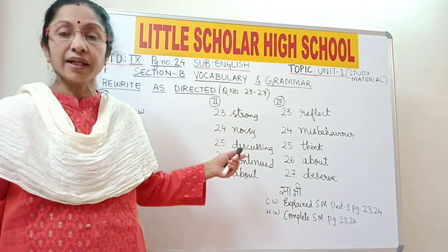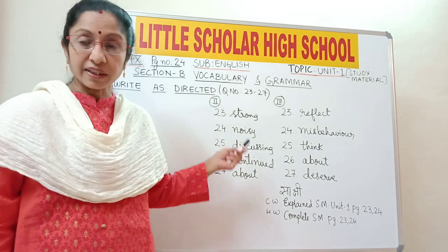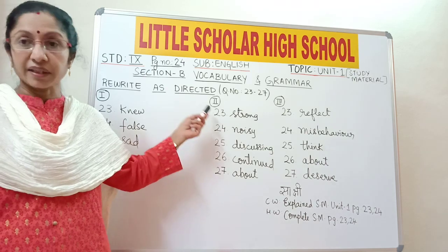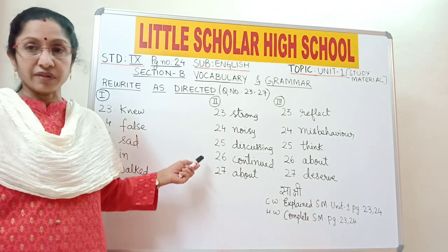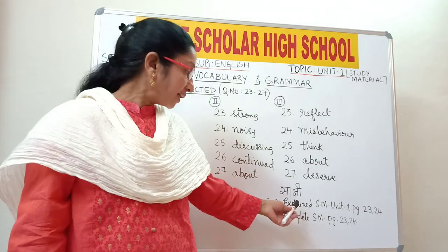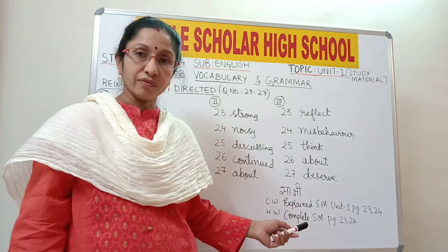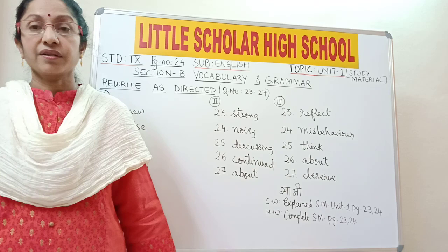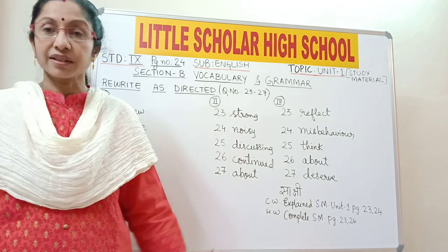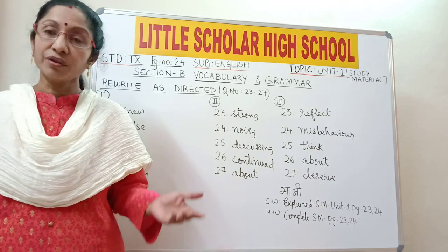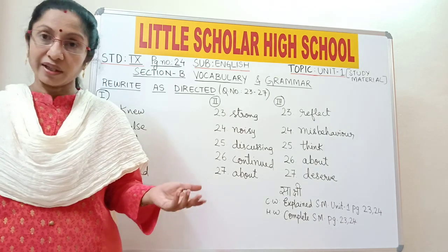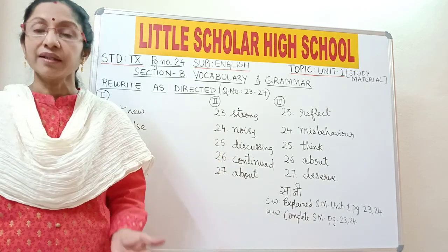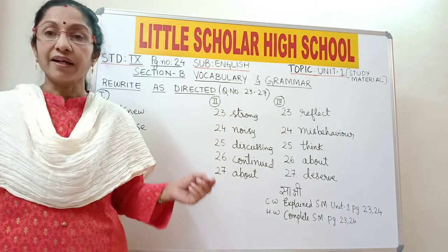Okay students, I hope all of you understood the vocabulary and grammar part — how to edit a passage, identify errors in it, and rewrite as directed, like how to write a sentence as per the instructions or replace a word as per the instructions. Now I want all of you to note down today's classwork: explain study material, Unit 1, page number 23 and 24. Homework: complete study material, page number 23 and 24. We have completed Unit 1 in the textbook as well as the study material. Update your classwork, write new words, complete the grammar in your textbooks, and revise each lesson thoroughly.